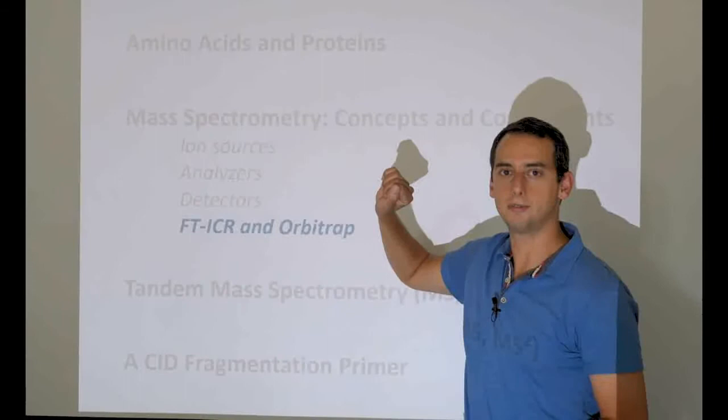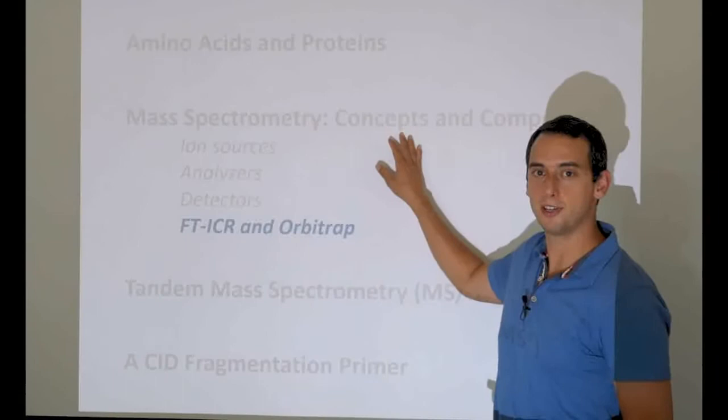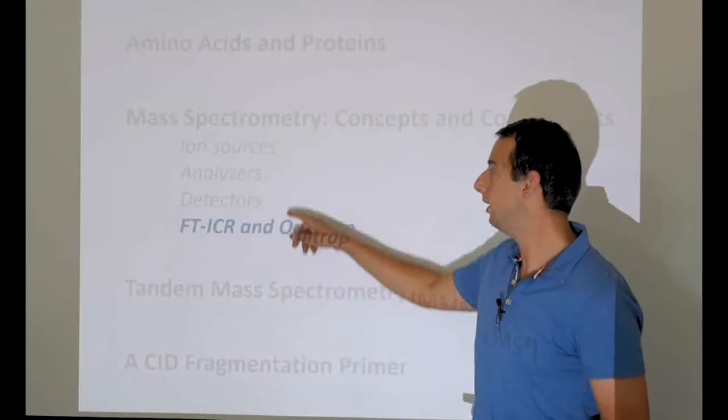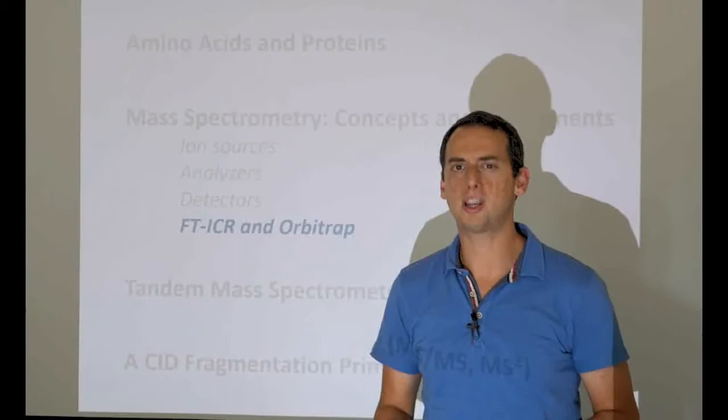We talked about the mass spectrometers themselves in the second lecture—their components, overall architecture, and ion sources. The third lecture covered the different analyzers, and the fourth lecture, the previous one, was about detectors: how they work and the caveats with these detectors, which are quite important for quantification.